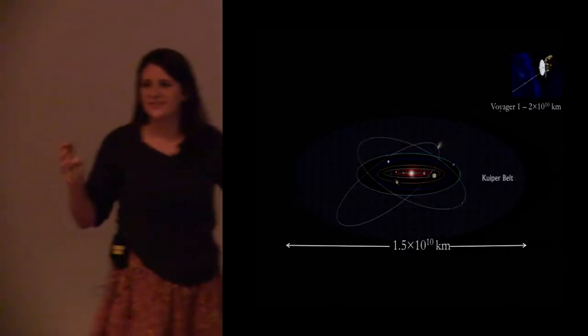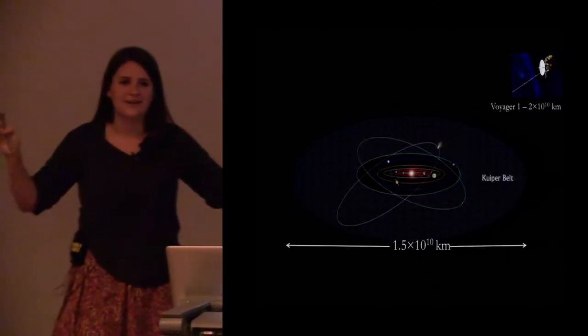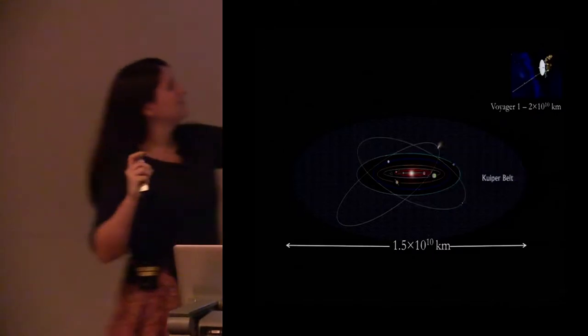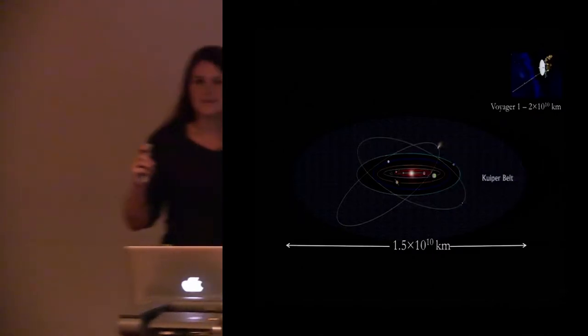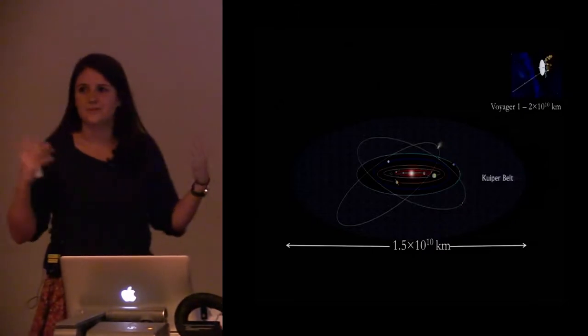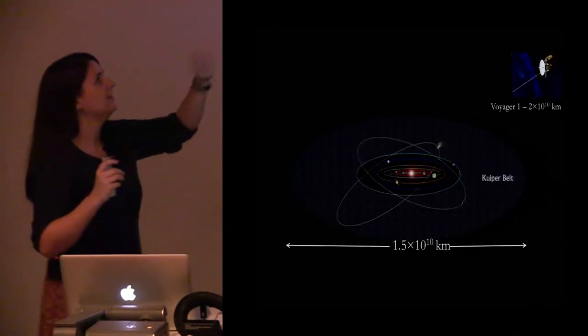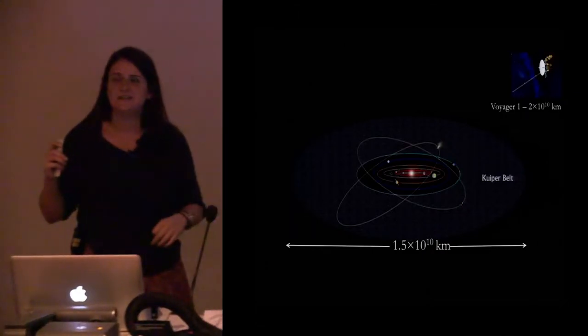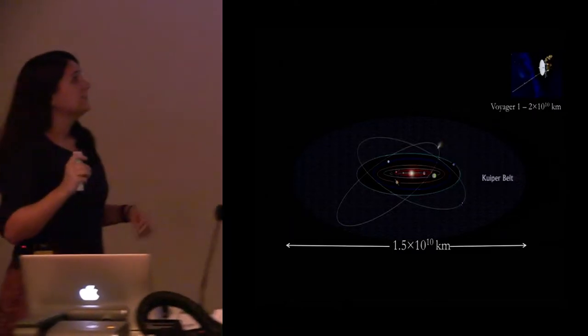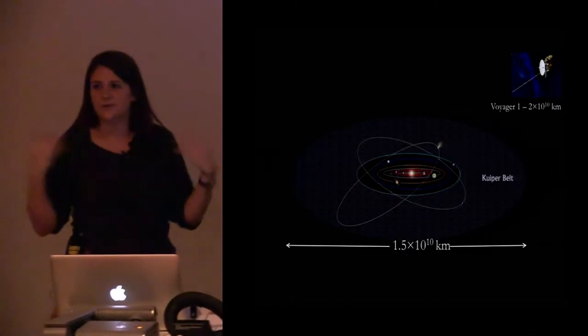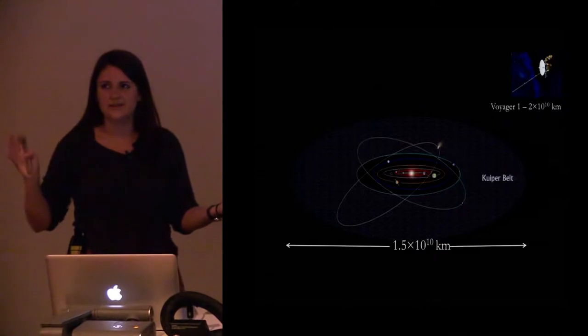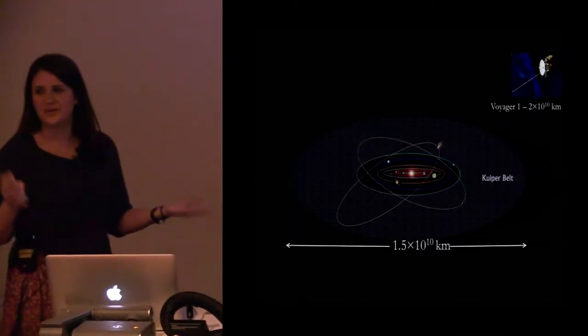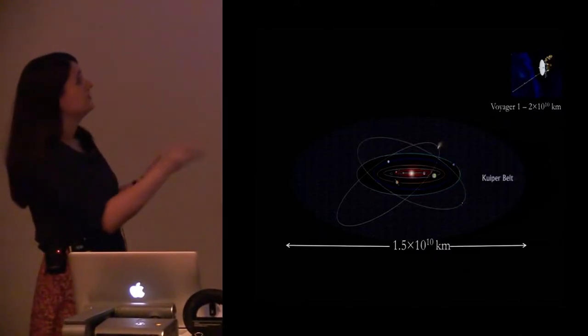I mean this distance is just so big we can't even really imagine it with our brains, but I'll try. So as an example, the furthest man-made object from Earth at the moment is the Voyager 1 spacecraft. Now this thing was launched in 1970s and it's only recently left our solar system. So it's taken 35 years, travelling at 17 kilometres per second and it's only just left our solar system.